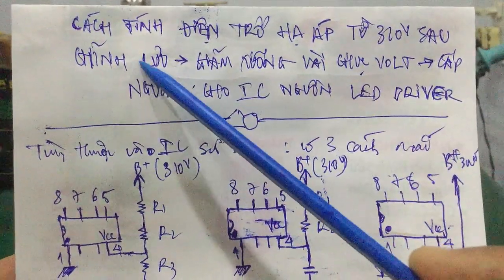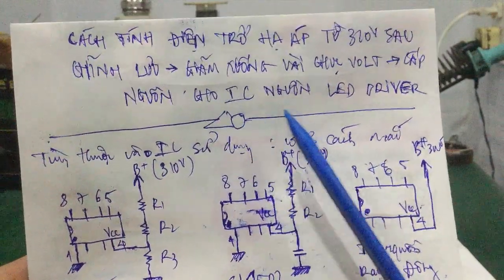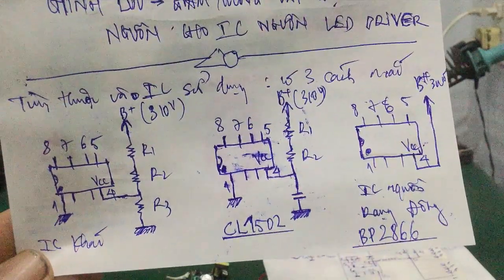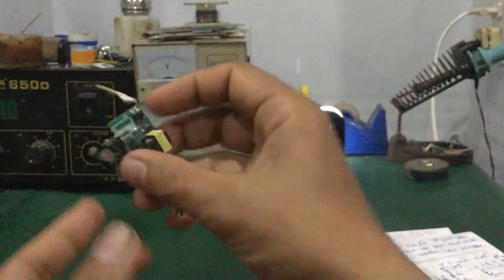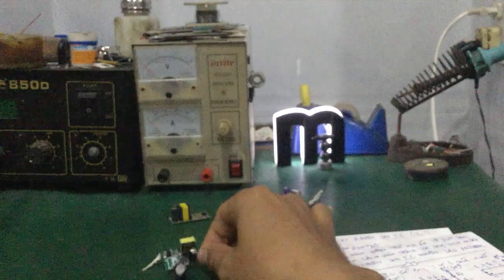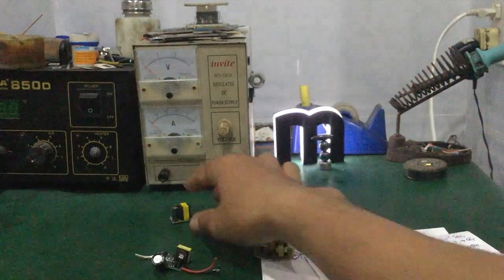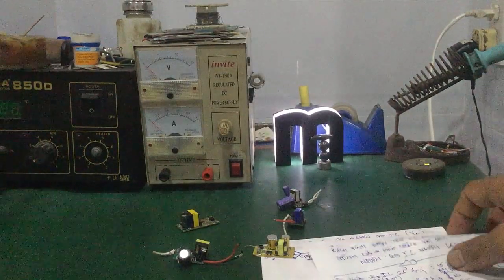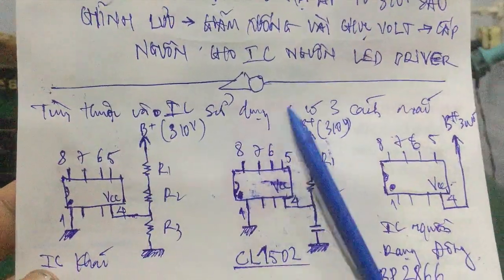Đây là cách tính điện trở hạ áp từ cái nguồn 310V sau chỉnh lưu, giảm xuống còn vài chục vôn, cấp nguồn cho IC nguồn LED driver. Thứ nhất là các bạn phải tùy thuộc vào con IC mà các bạn sử dụng, vì trên thị trường có rất nhiều bộ nguồn LED driver của nhiều hãng khác nhau, nhiều loại khác nhau. Mình đã thống kê được 3 cái cách mắc của từng loại IC khác nhau. Tùy thuộc vào IC sử dụng, ở đây có 3 cách mắc.